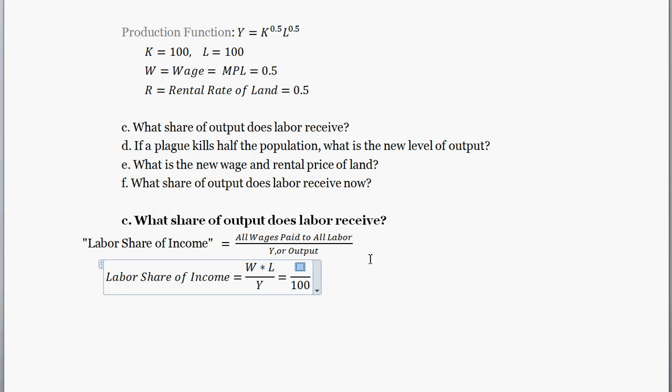So the wage rate was 0.5 times, and then how much labor was there? Well that's here, 100. So one-half times 100, that's 50. So a total of 50, I guess units, dollars, whatever, were given to labor. And that was out of 100 total that was possible to be given. So the labor share of income, the portion of output that went to labor, is equal to one-half in our little simple economy.